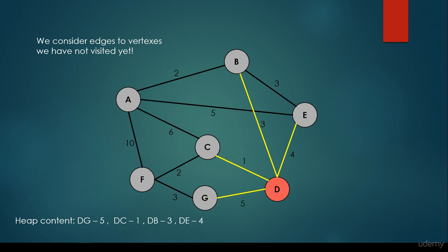So we will have the edge DG — meaning the starting vertex is D, the target vertex is G, and the edge weight is 5. We have DC with weight 1, meaning the starting vertex is D, the target vertex is C, and the edge weight is 1. Then we have the edge from D to B, and from D to E.